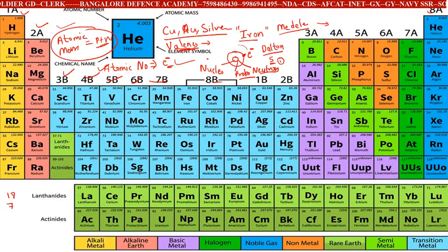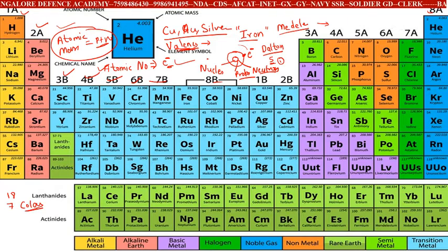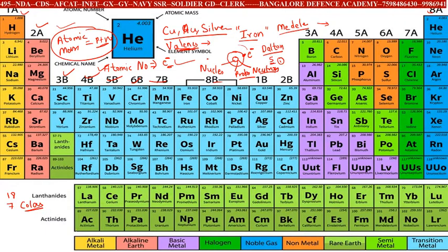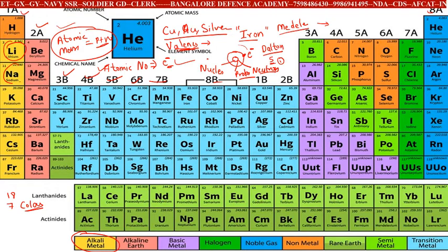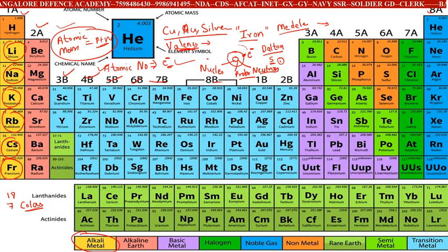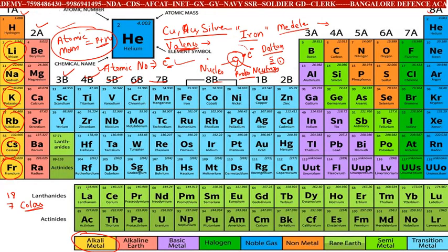Let us check what the colors on the periodic table represent. On the screen you can see blue, brown, yellow, and light green colors. First, alkali metals — you can see lithium, sodium, potassium, rubidium, cesium, and francium. The yellow color metals on the left side in the first column are alkali metals.